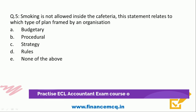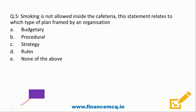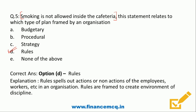Question 5: 'Smoking is not allowed inside the cafeteria.' This statement relates to which type of plan formed by an organization? A) Budgetary, B) Procedural, C) Strategy, D) Rules, E) None of the above. This is a rule — Option D is the correct answer. Rules spell out actions or non-actions which employees and workers are to follow, and these are framed to create an environment of discipline.